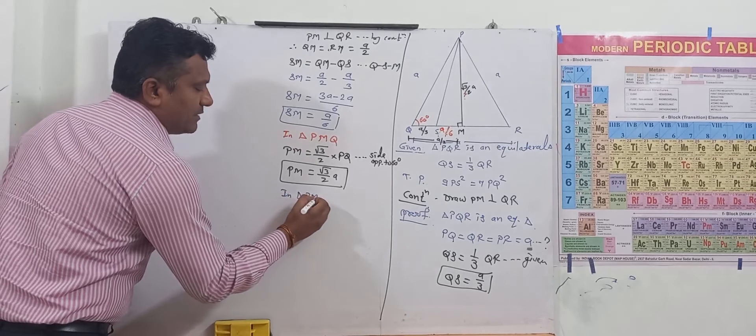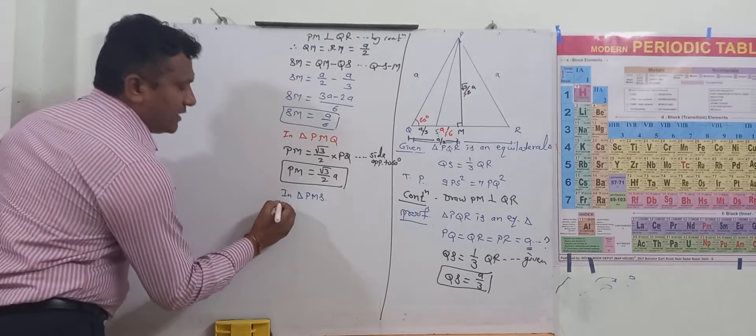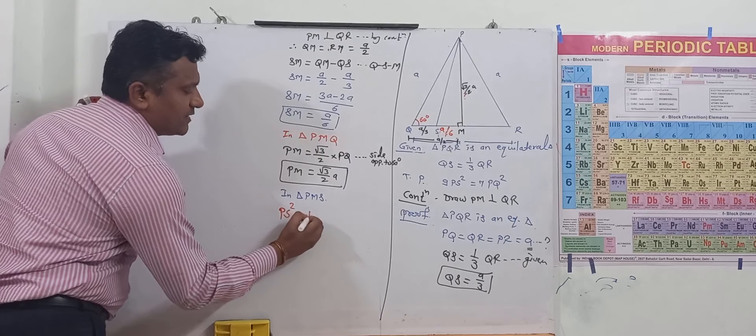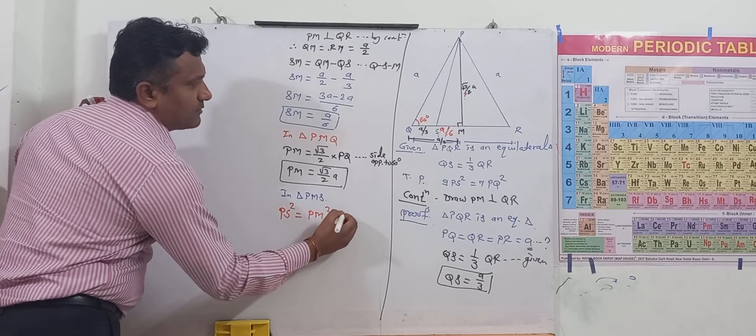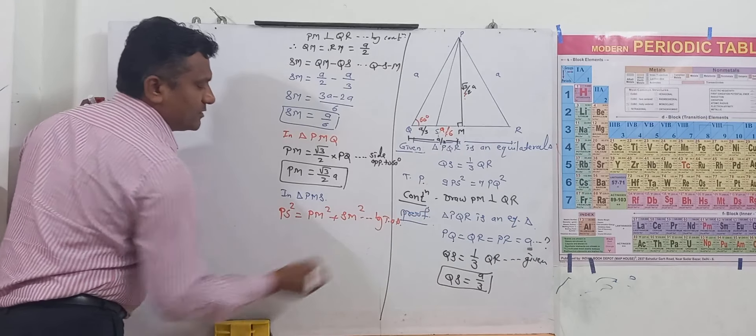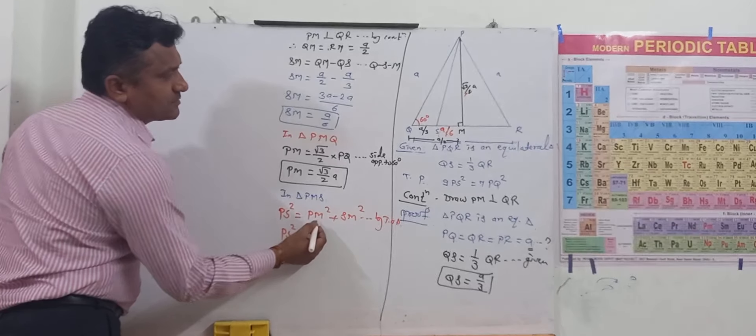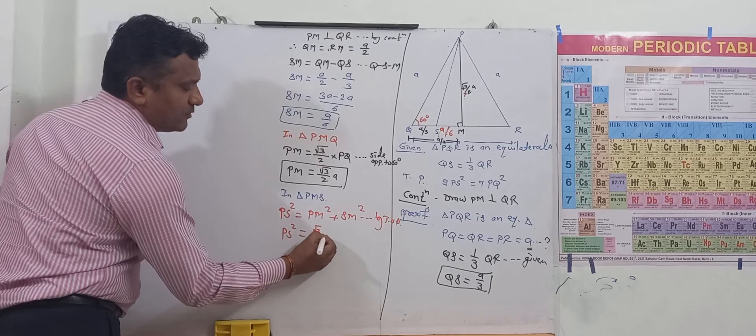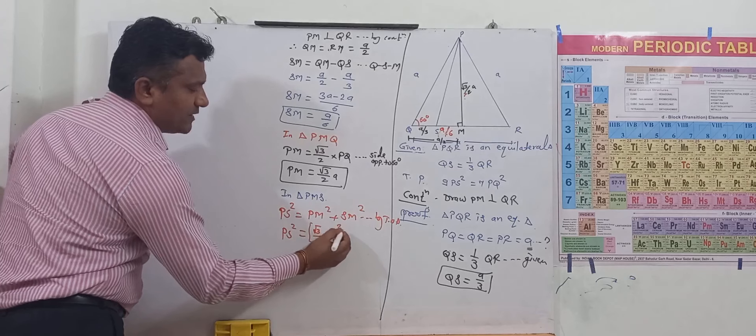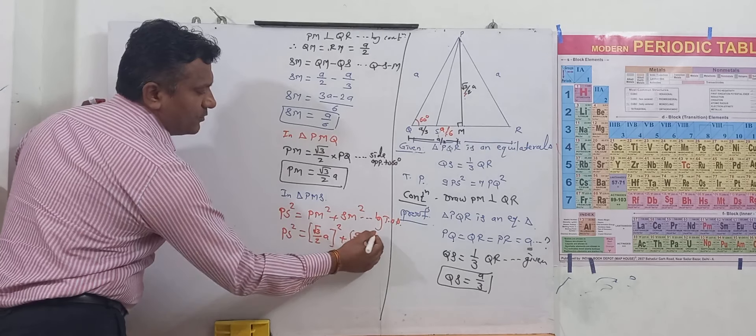Now we consider triangle PMS. In triangle PMS, Pythagoras apply. In triangle PMS it is PS square equal to PM square plus SM square by theorem of Pythagoras. So it is PS square equal to PM is how much, it is root 3 by 2 of A the whole square plus SM is A by 6 the whole square.